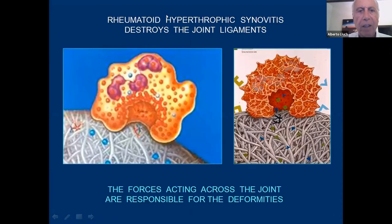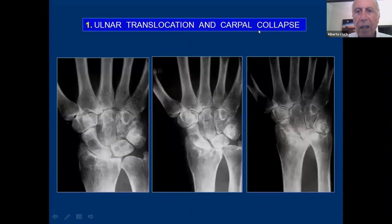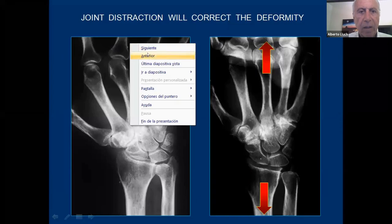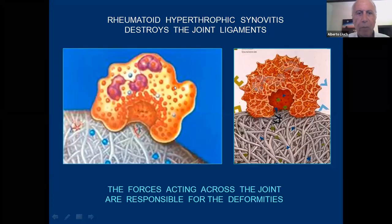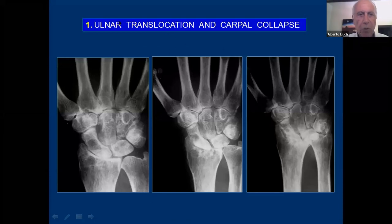What happens in rheumatoid arthritis is that the hypertrophic synovitis will destroy the joint ligaments, and the forces acting across the joint are responsible for the deformities. So the deformities we will have are first ulnar translocation and carpal collapse — the carpal bones will move towards the ulnar side and will also collapse.